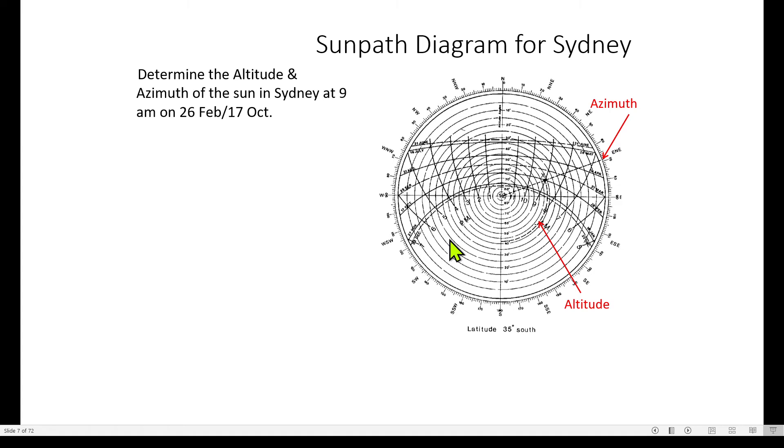You can download Sun path diagrams if you want to find azimuth and altitude. In solar panel and renewable energy study, we need a lot of solar irradiance data to know how much energy we get from the Sun. Nowadays with the help of the internet, a lot of government sites provide irradiance data, but it's very important to know the Sun path diagram. So I downloaded one for Sydney. The latitude is around 33 or 35 degrees South.